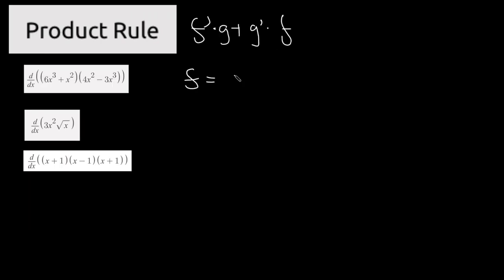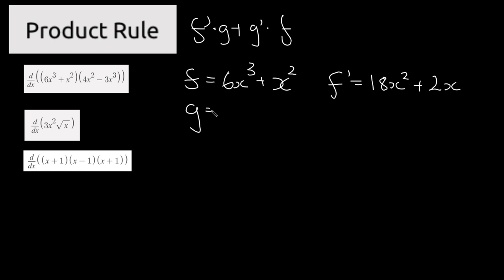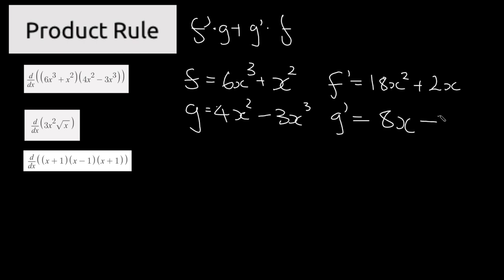For the next example, f is equal to 6x to the power of 3 plus x squared, and f prime is equal to 18x to the power of 2 plus 2x. g is equal to 4x squared minus 3x to the power of 3, and g prime is equal to 8x minus 9x to the power of 2. Now we have all our terms.